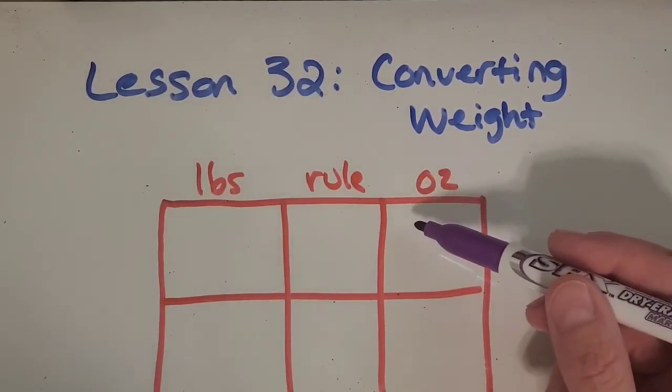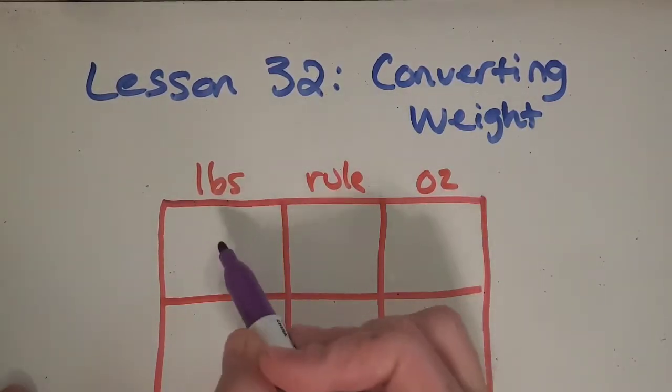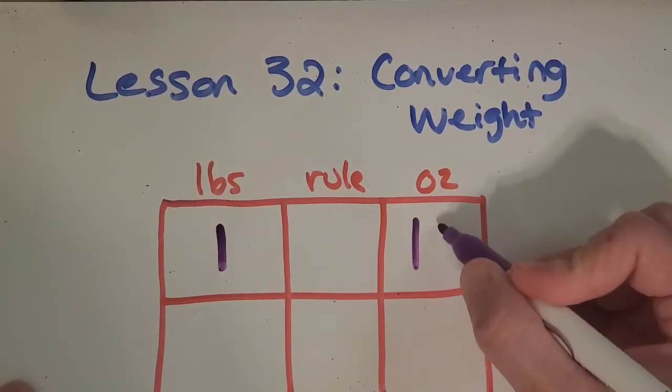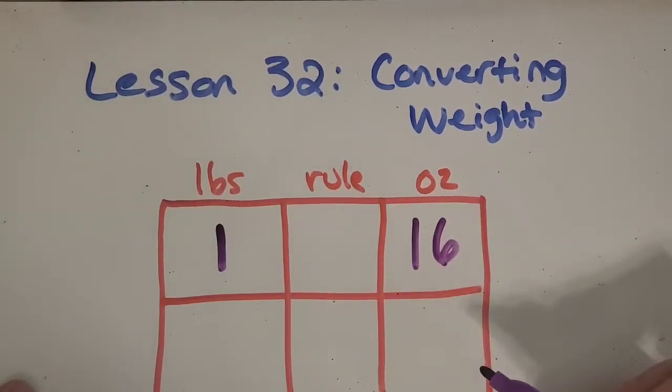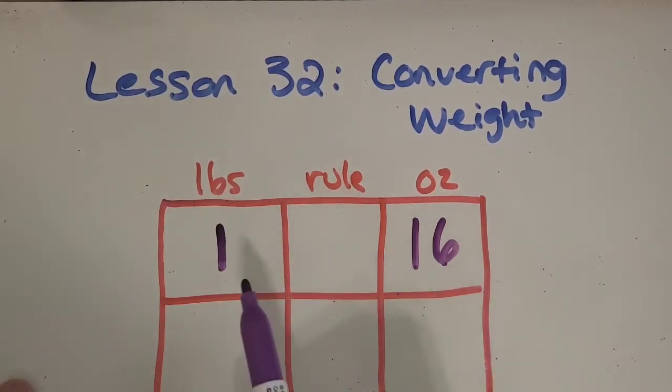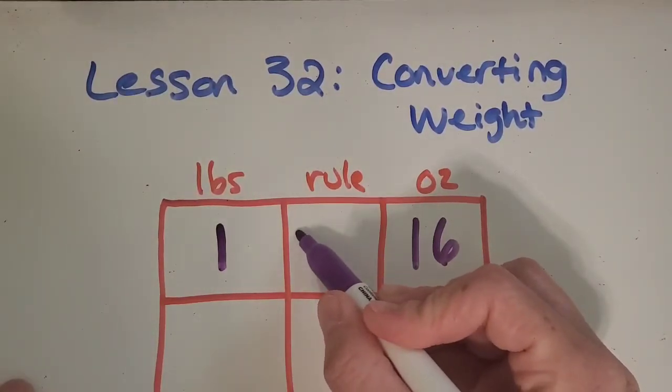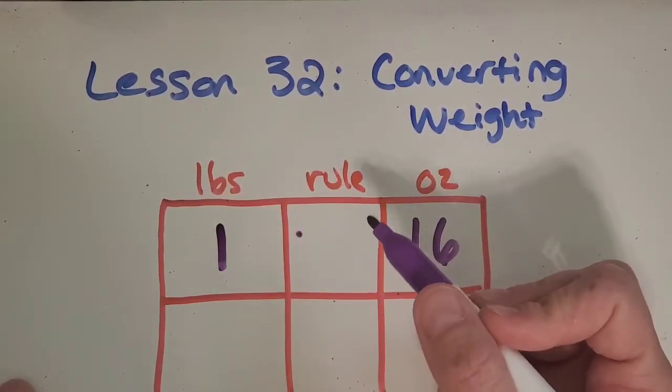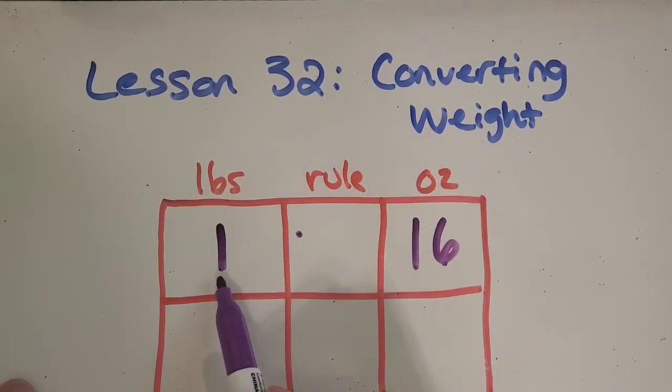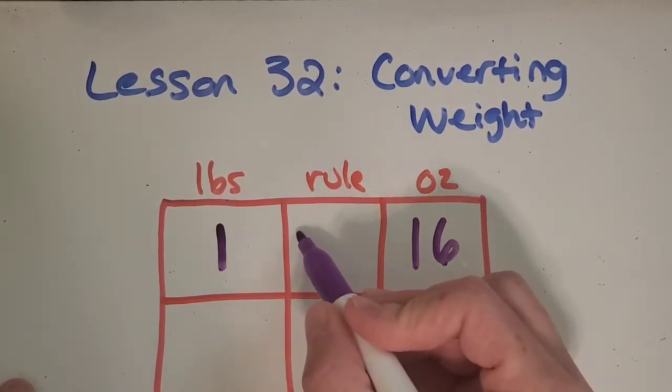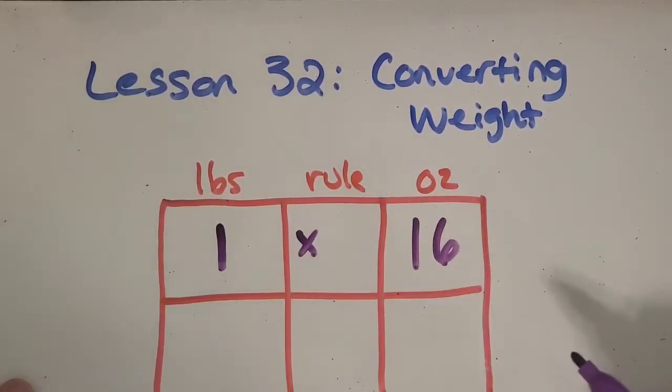So in this case we know that one pound is 16 ounces and so we just have to think of what rule it takes to get from 1 to 16. If you remember in the last video these are all going to be multiplying or dividing and when you're going from a 1 up to a bigger number like 16 it's always going to be multiplying. So 1 times what equals 16?